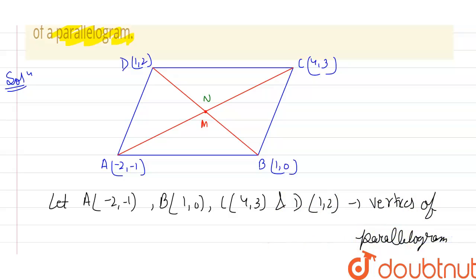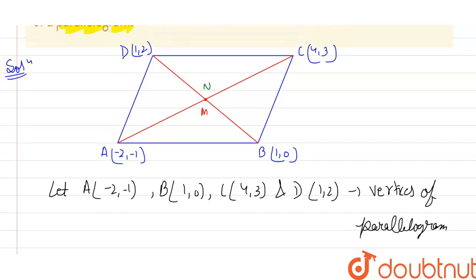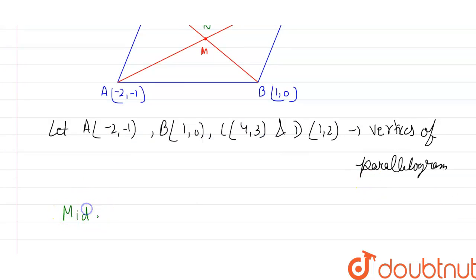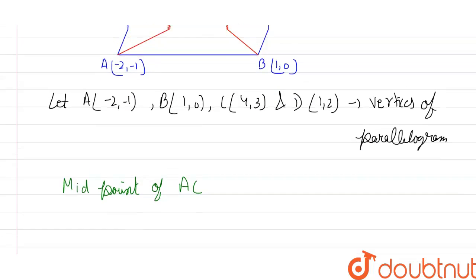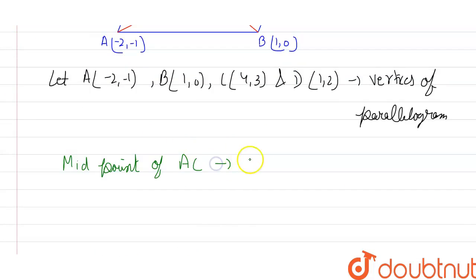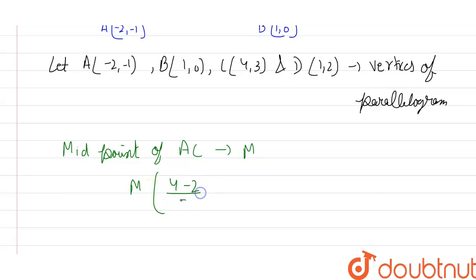Now I'm going to find the midpoints. First, I'll find the midpoint of diagonal AC, and let's name this as my M point. The x-coordinate of M will be: 4 plus (-2), which is (-2 + 4) divided by 2.